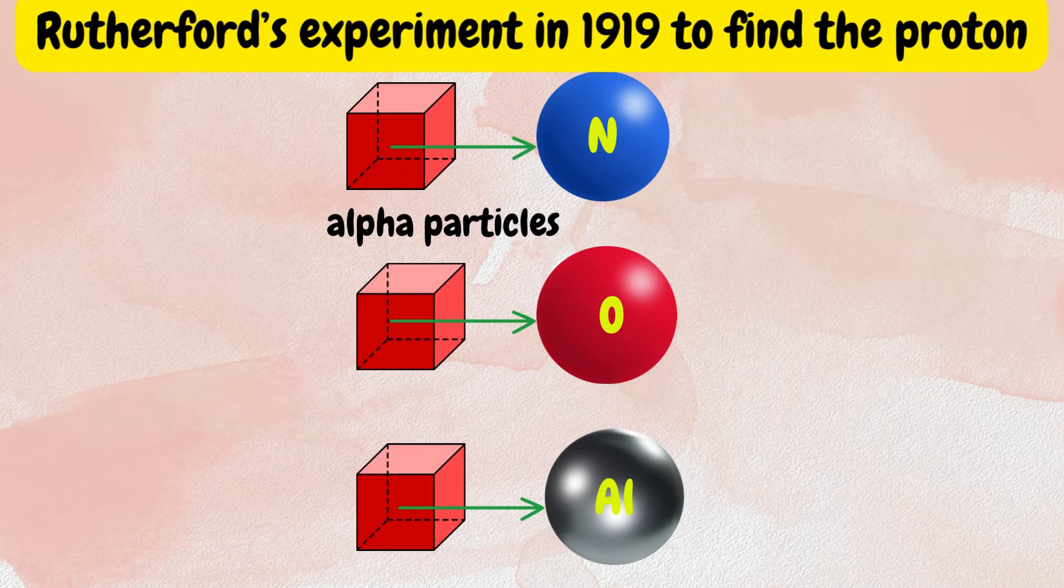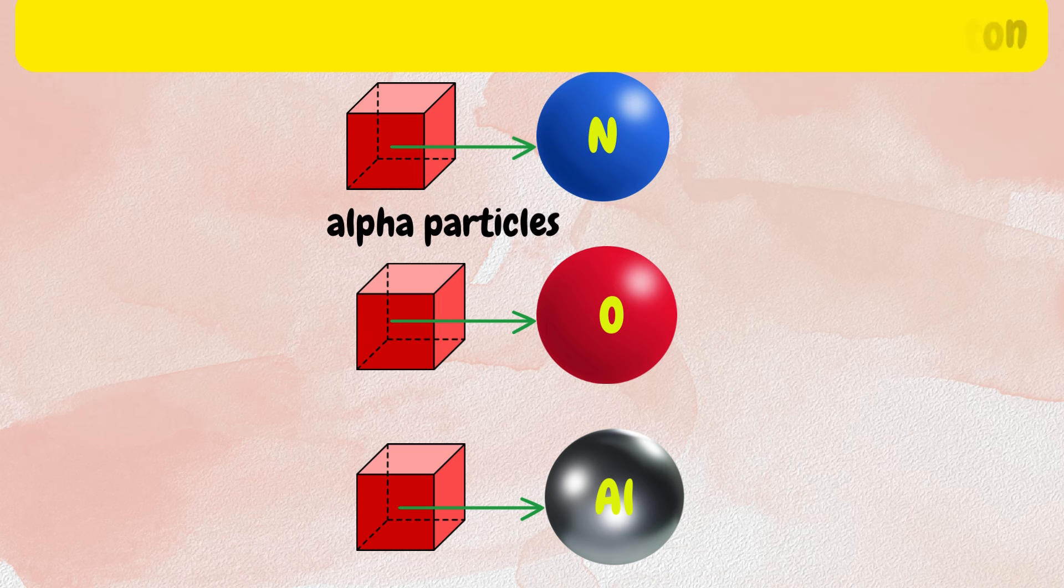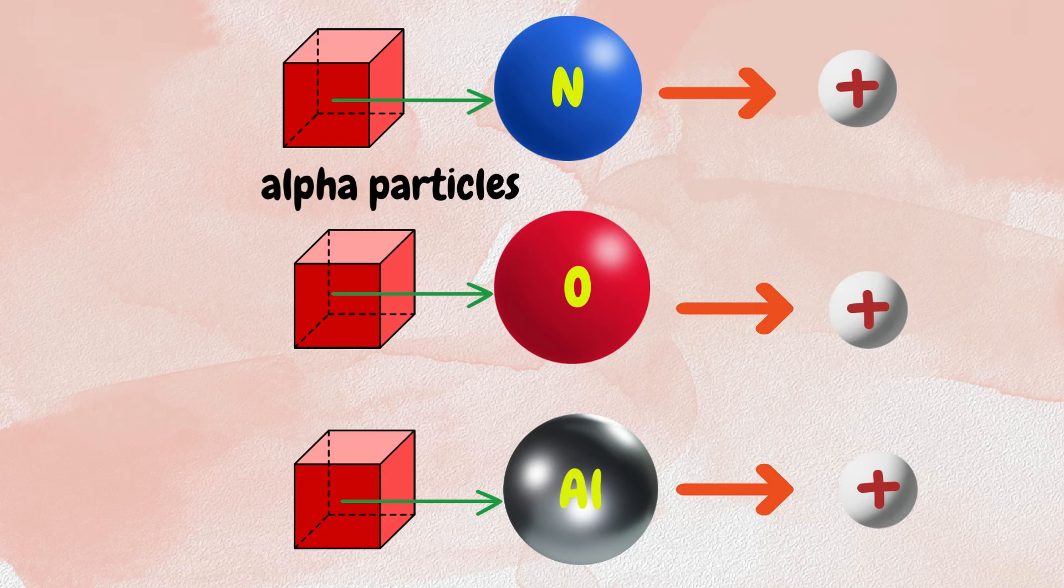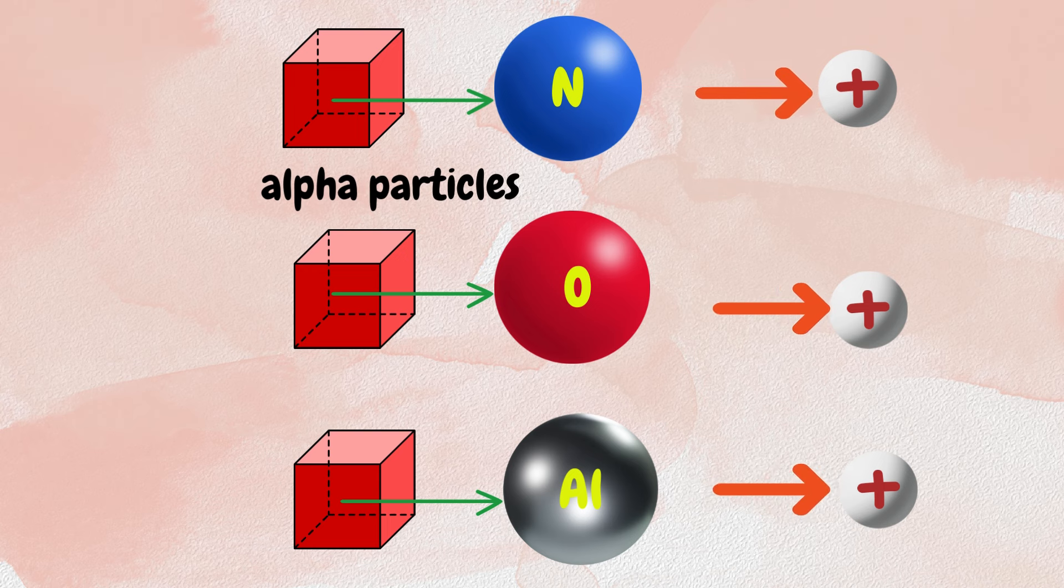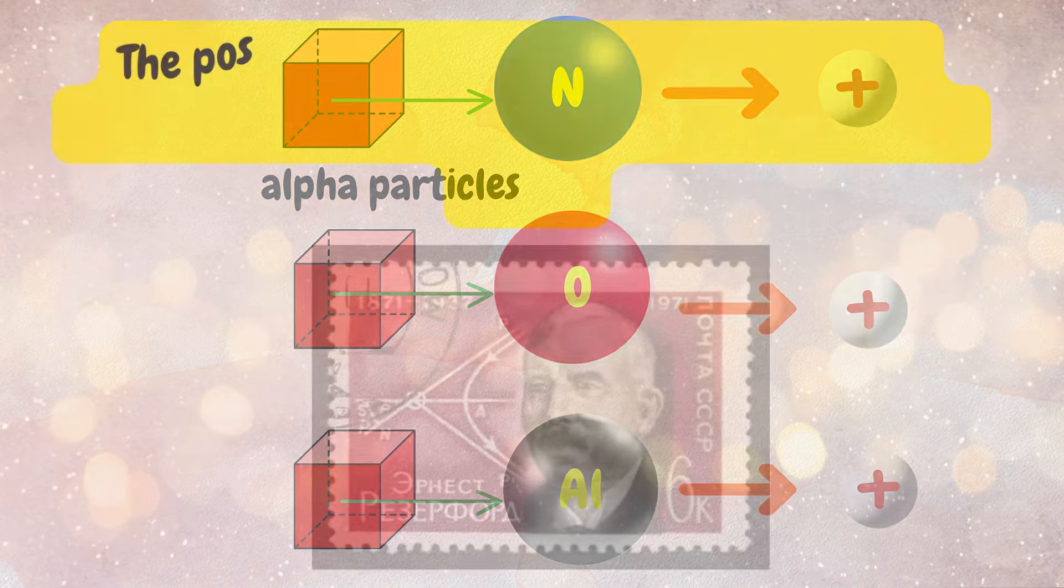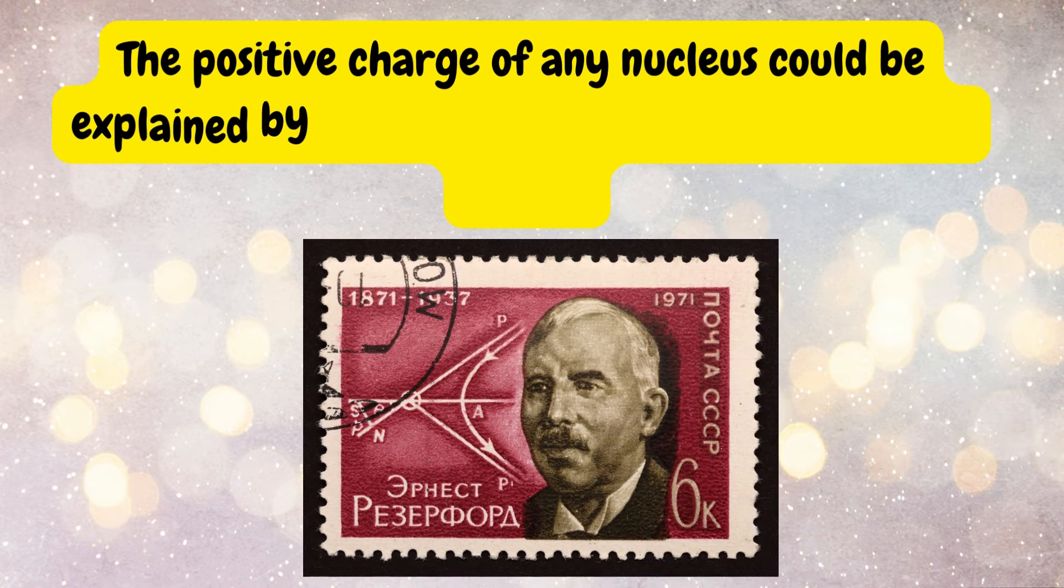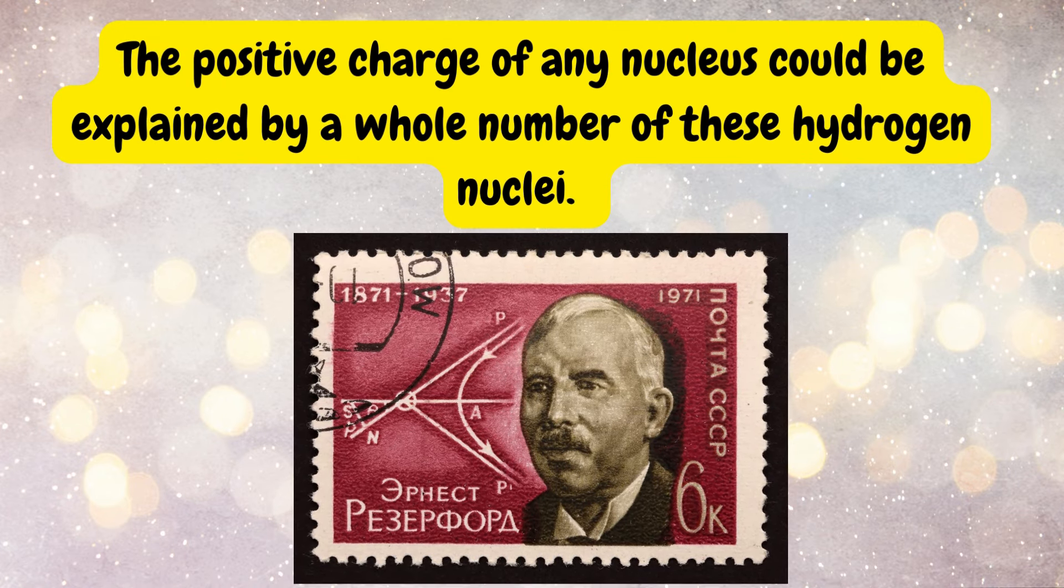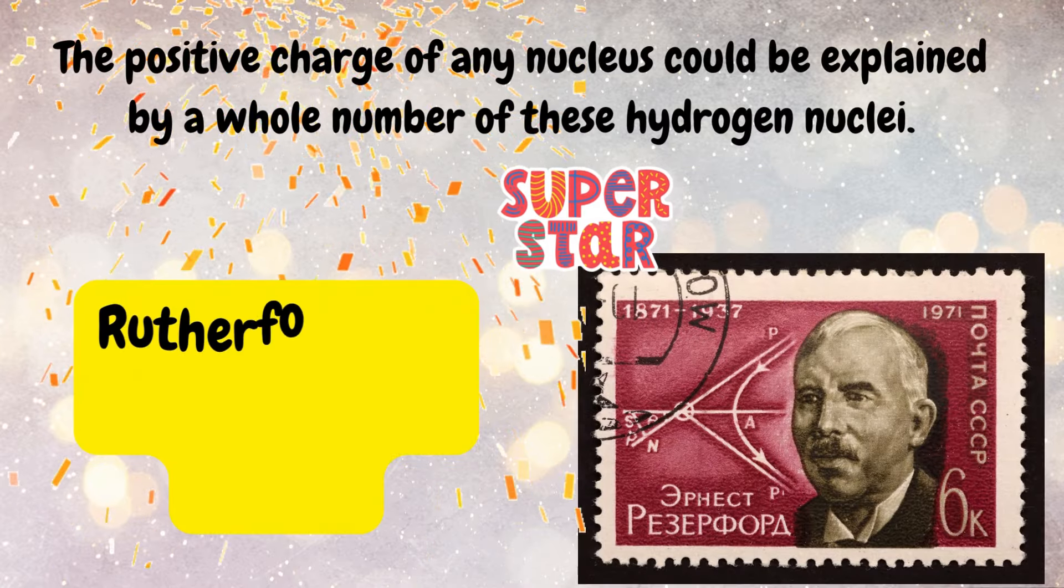Later in 1919, Rutherford observed that when struck by an alpha particle, nitrogen, oxygen, and aluminum disintegrated, emitting positively charged hydrogen nuclei. So the positive charge of any nucleus could be explained by a whole number of these hydrogen nuclei. Rutherford had discovered the proton.